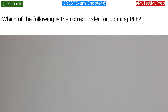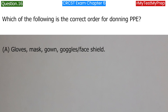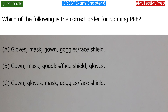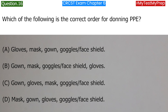Which of the following is the correct order for donning PPE? A. Gloves, mask, gown, goggles or face shield. B. Gown, mask, goggles or face shield, gloves. C. Gown, gloves, mask, goggles or face shield. D. Mask, gown, gloves, goggles or face shield. Answer: B. Gown, mask, goggles or face shield, gloves.